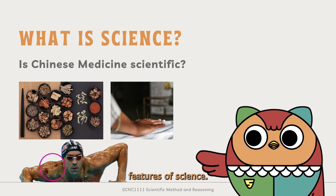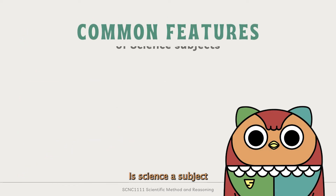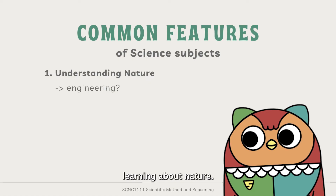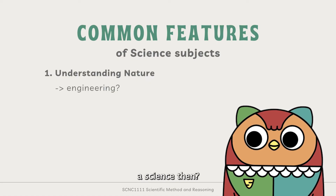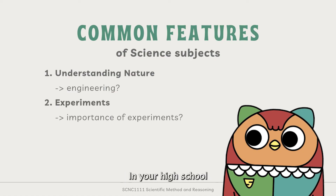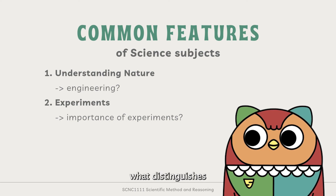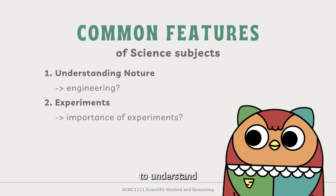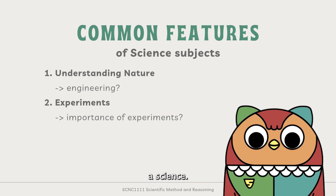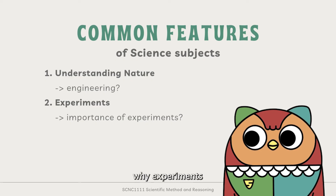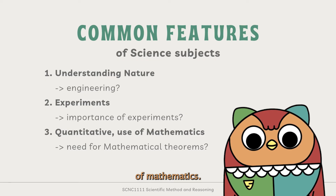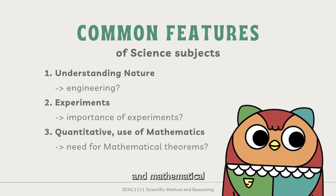Then let's list out some common features of science. Great idea, Curio! Is science a subject that tries to understand nature? That sounds like a good description. But what about engineering? Engineers attempt to create things that do not exist in nature by first learning about nature. Can we classify engineering as a science then? What about experiments? In your high school science subjects, you may have done many experiments. But are experiments what distinguishes a science from another subject? Take psychology, for example. Many social experiments are carried out to understand human nature, but it isn't considered a science. Nevertheless, it is important to consider why experiments are so important in science. Another point is that science subjects tend to be quantitative and make use of mathematics. But what is the need for all these complex calculations and mathematical theorems?